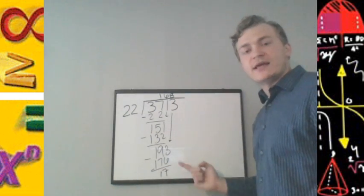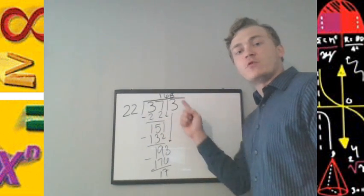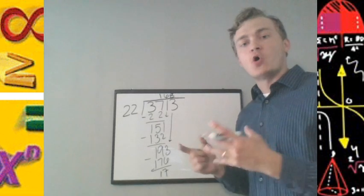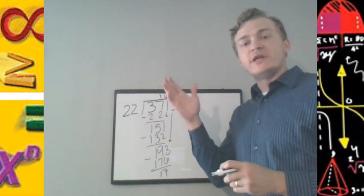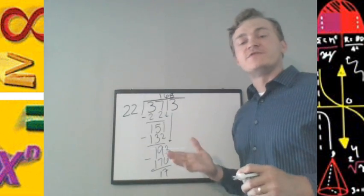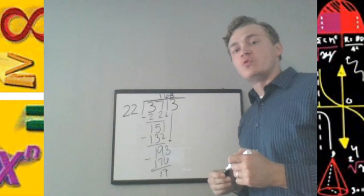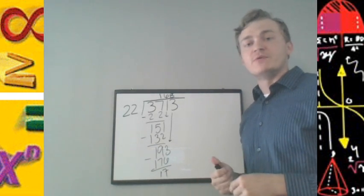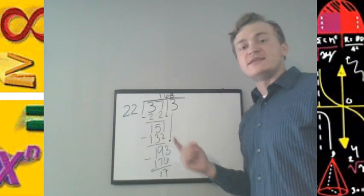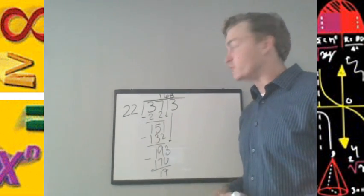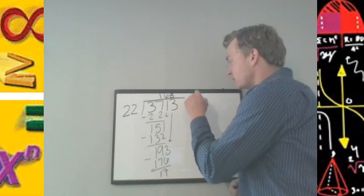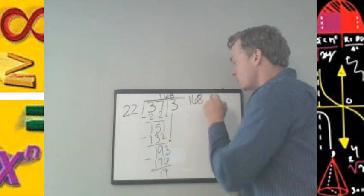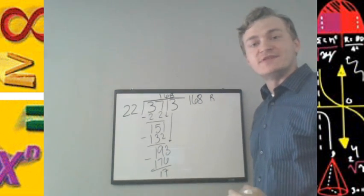Notice we have no more digits to bring down. Therefore, this division here wasn't a nice, wholesome division. It's not that we had 20 divided by 5 is 4. It was more of 20 divided by 6 is 3 with a remainder of 2. In this case here, 3,713 divided by 22 is 168 with a remainder of 17.